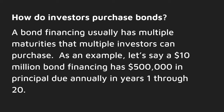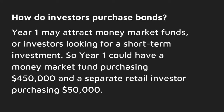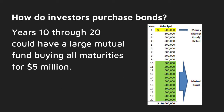As an example, let's say a $10 million bond financing has $500,000 in principal due annually in years 1 through 20. Year 1 may attract money market funds or investors looking for a short-term investment, so year 1 could have a money market fund purchasing $450,000 and a separate retail investor purchasing $50,000. Years 10 through 20 could have a large mutual fund buying all maturities for $5 million.